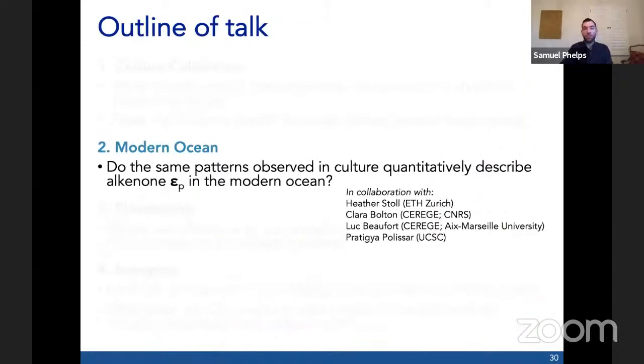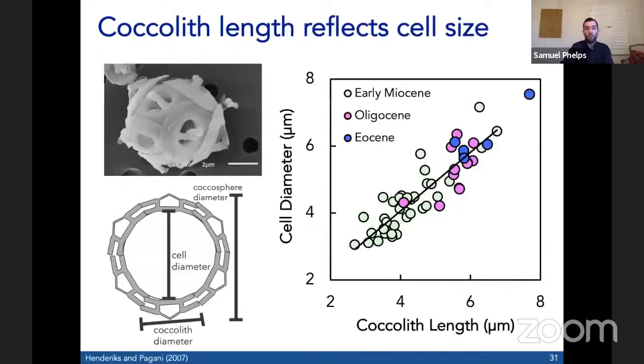The driving question here is: do these same patterns observed in culture quantitatively describe alkenones in the modern ocean? The things we need to consider are irradiance, CO2, and cell size. Fortunately, we have a way to constrain cell size. Really fundamental work by Durenja Hendricks found intact cocclospheres in sediments throughout the Cenozoic and measured the cell diameter and coccolith length by SEM. That study in 2007 found that coccolith length and cell diameter are highly correlated. This has been confirmed in culture experiments. There's data by McClellan et al. 2016 with a rich data set of culture experiments that came to the same conclusion. By measuring coccolith length in sediment samples using microscopy, we can estimate the geometry of the cell and constrain cell radius as one of the inputs into the EP model.